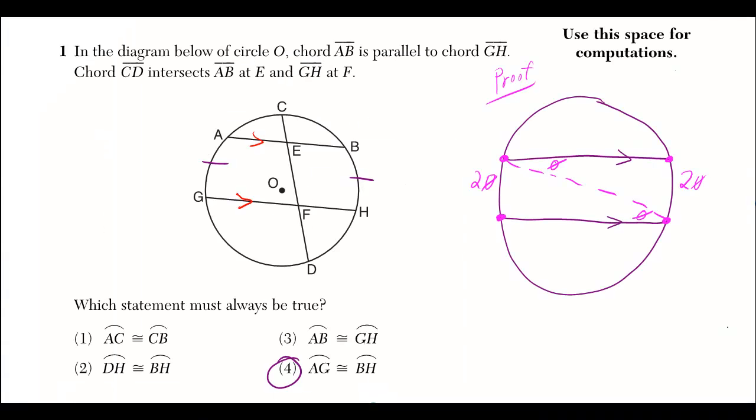In the diagram below of circle O, chord AB is parallel to chord GH. Chord CD intersects AB at E and GH at F.